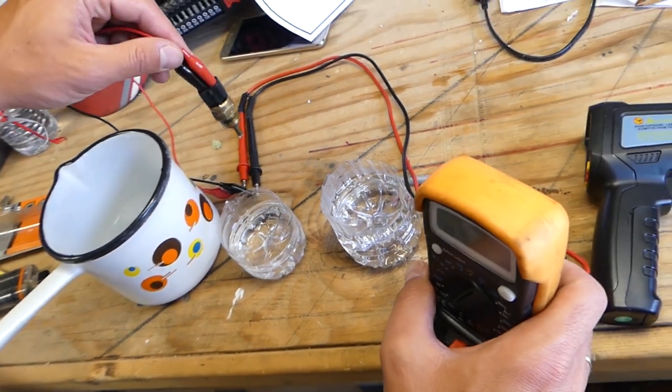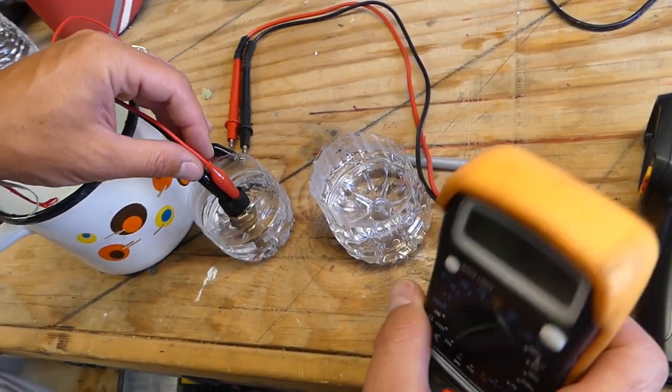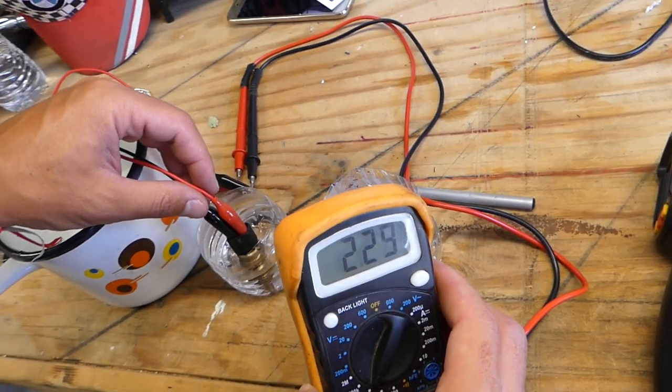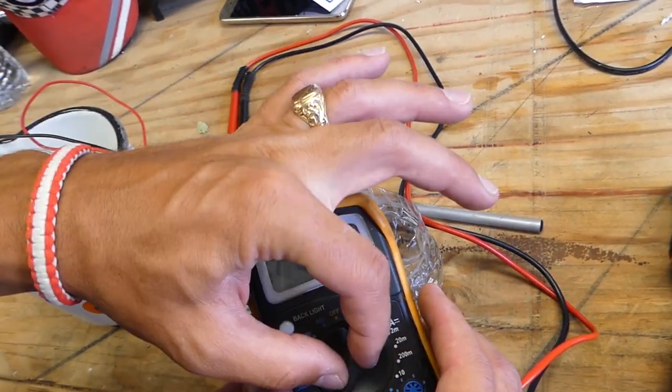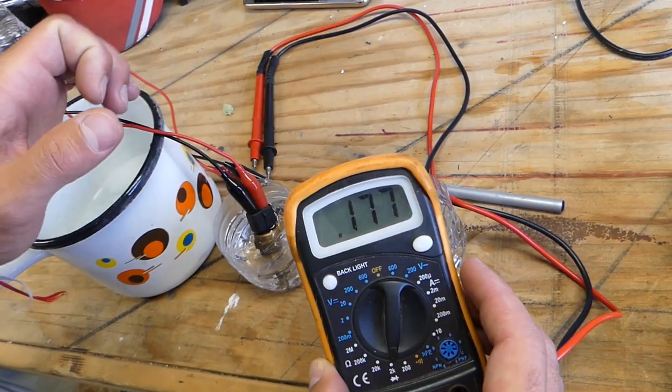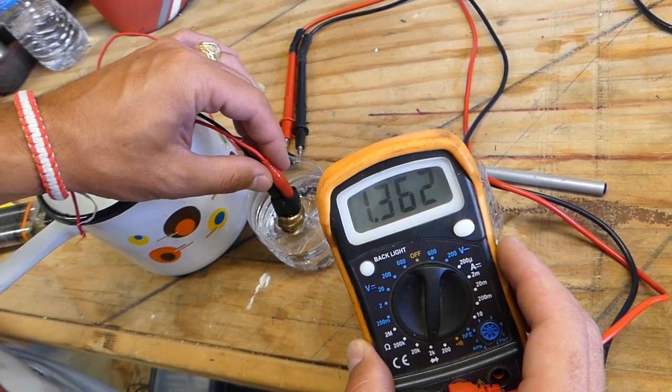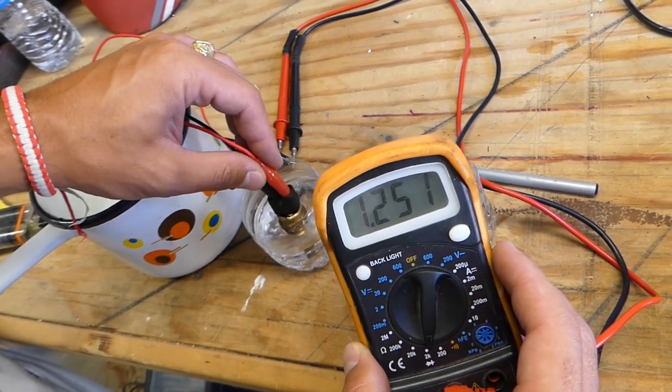Now we should get somewhere between 975 and about 1050. We can switch back to the lower numbers now. You can see it's still dropping.